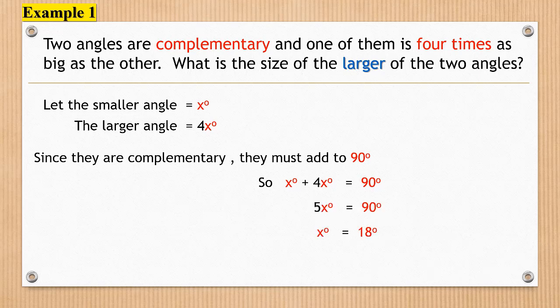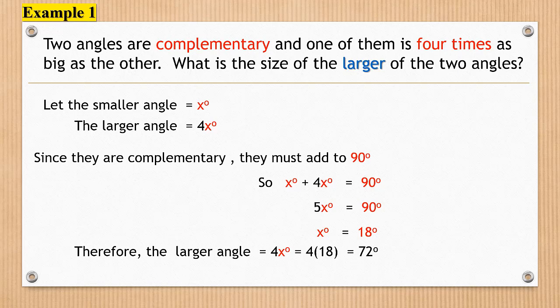We solve for x, we will get x is 18 degrees. Therefore, the larger angle is four times 18 degrees, which is equivalent to 72 degrees.